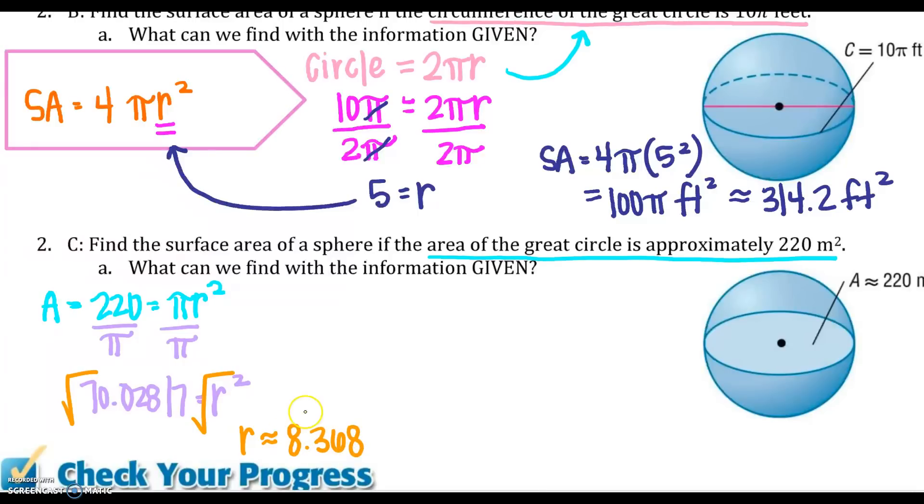So once I find my radius, I'm then going to put it into my surface area of a sphere, the total. So the total one is 4πr². Remember, hemisphere is only 3. So 4π, my radius squared, 8.368 squared. So when I do that and I only square the radius, I get 878 meters squared.